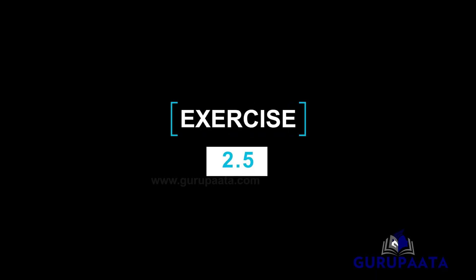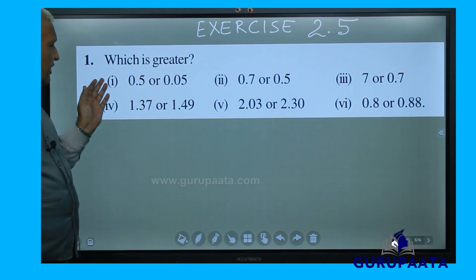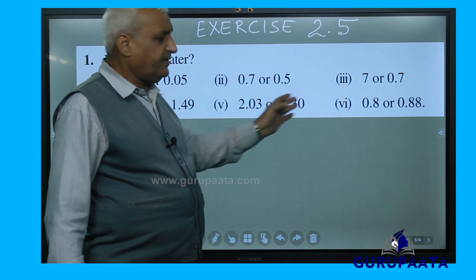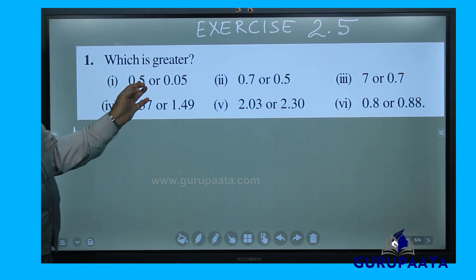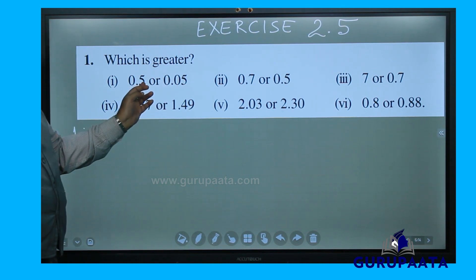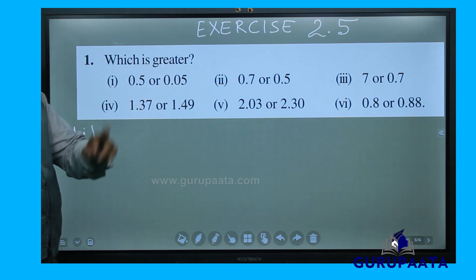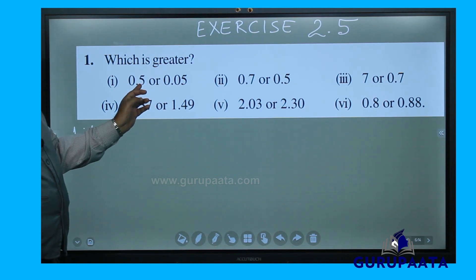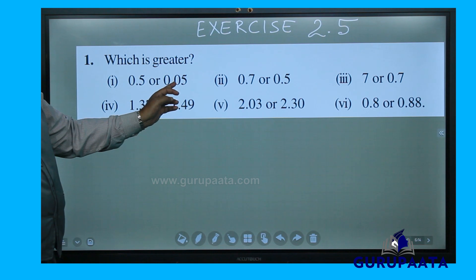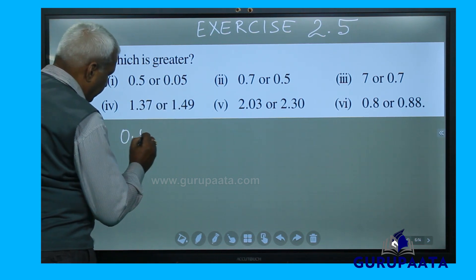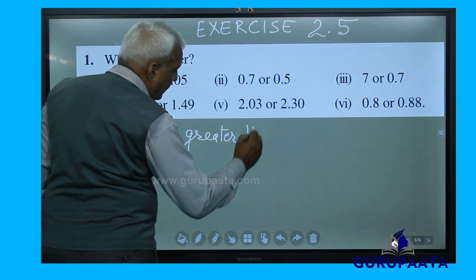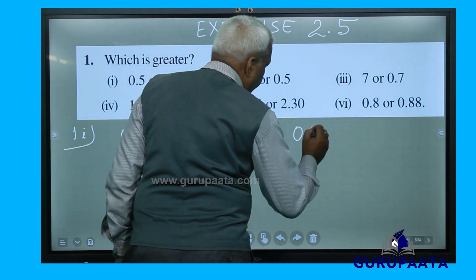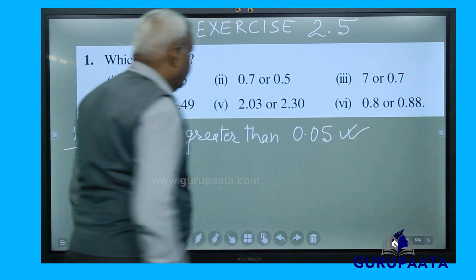We will now start exercise 2.5, which asks 'which is greater.' This question has 6 sub-questions, and we will do them one by one. For question 1: 0.5 is greater because the 5 is at the 10th place, whereas in the other number, 5 is at the 100th place. So 0.5 is greater than 0.05.